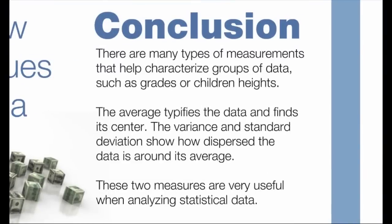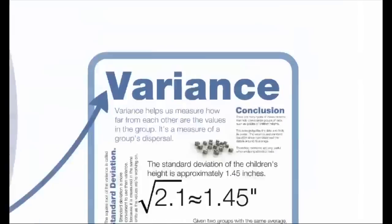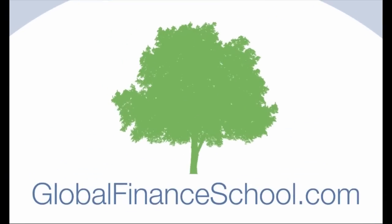Conclusion: There are many types of measurements that can help characterize groups of data, such as grades or children's heights. The average typifies the data and finds its center. The variance and standard deviation show how dispersed the data is around its average. These two measures are very useful when analyzing statistical data.